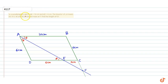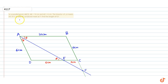In this question, it is given that in a parallelogram ABCD, AB is equal to 10 centimeters and AD is equal to 6 centimeters. The bisector of angle A meets DC at E, and AE and BC produced meet at F. Find the length of CF.